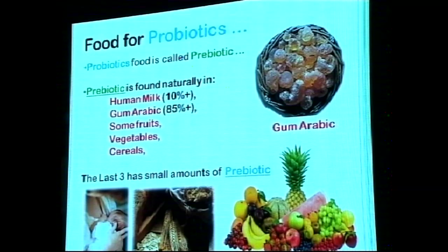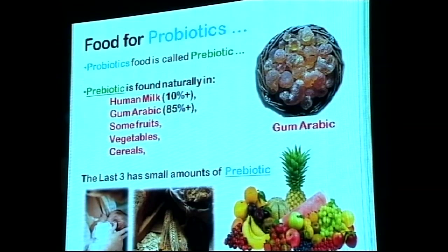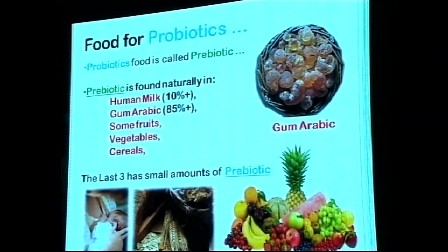Prebiotic is found naturally in human milk and gum arabic. Other fruits, cereals, and vegetables also contain prebiotic, but in small amounts. Gum arabic is the richest source at 85% prebiotic content — the food for the bacteria that removes fiber.